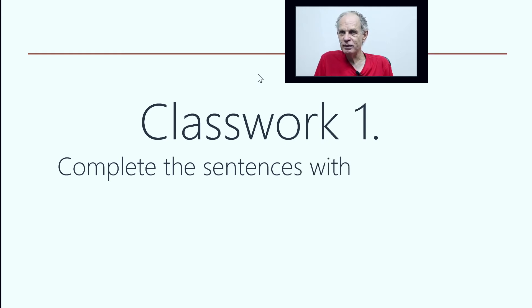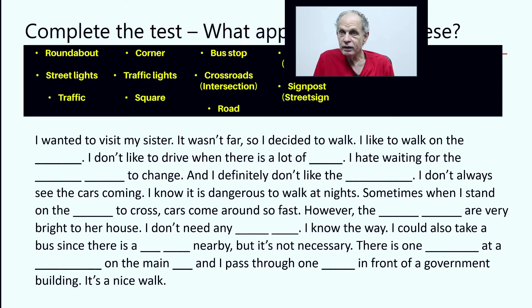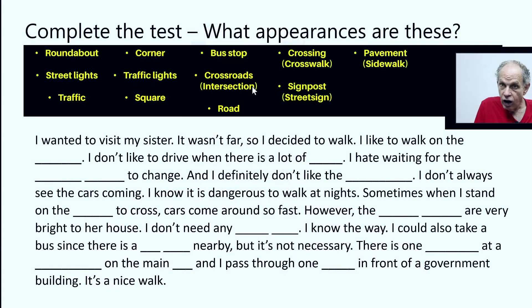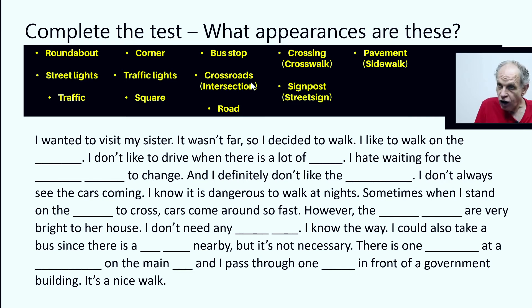Classwork one. Complete the sentences with the words. I wanted to visit my sister. It wasn't far, so I decided to walk. I like to walk on the pavement. I don't like to drive when there is a lot of traffic. I hate waiting for the traffic lights to change. And I definitely don't like the roundabout — I don't always see the cars coming.